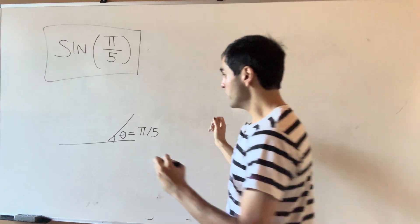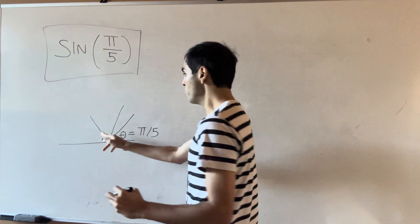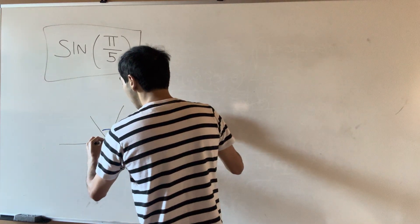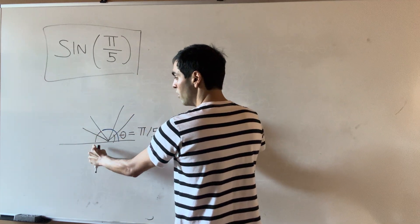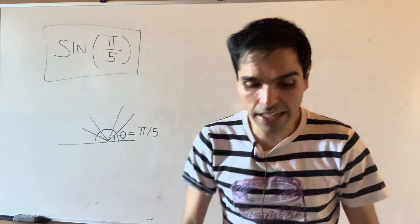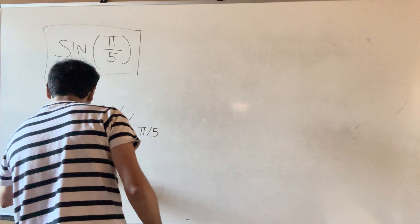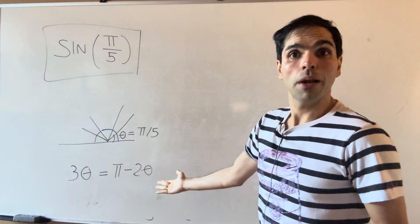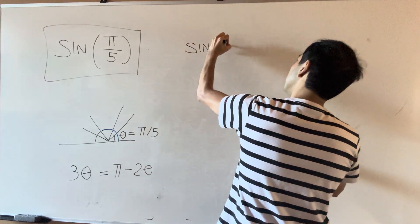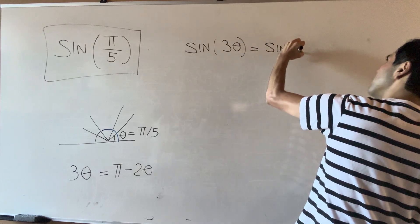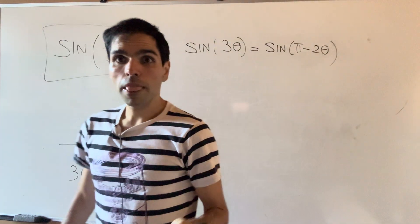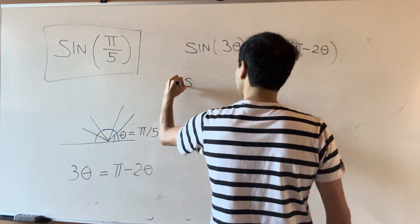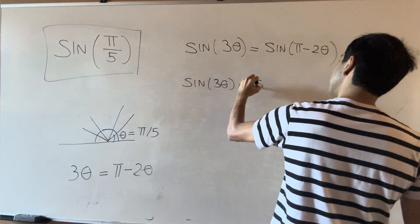What makes this work is the following: if you consider three theta, then it's the same thing as pi minus two theta. So three times this angle is 180 minus two times that angle, meaning three theta equals pi minus two theta. Applying sine to both sides: sine of three theta equals sine of pi minus two theta. But since sine of pi minus x equals sine of x, we get sine of three theta equals sine of two theta.